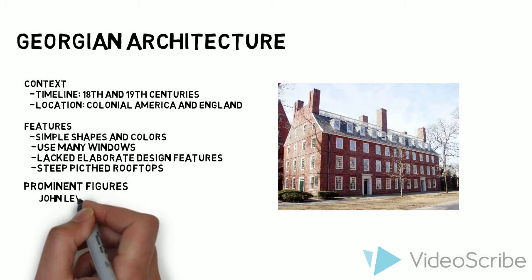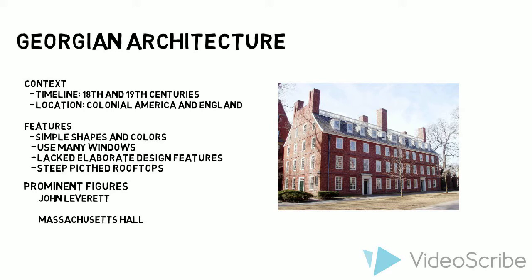This is Massachusetts Hall, designed by John Leverett, the oldest surviving building at Harvard College. Take note of its symmetry and relatively plain design when compared to those of Baroque style of architecture. The significant number of windows was meant to maximize the amount of natural light coming in during the daylight.